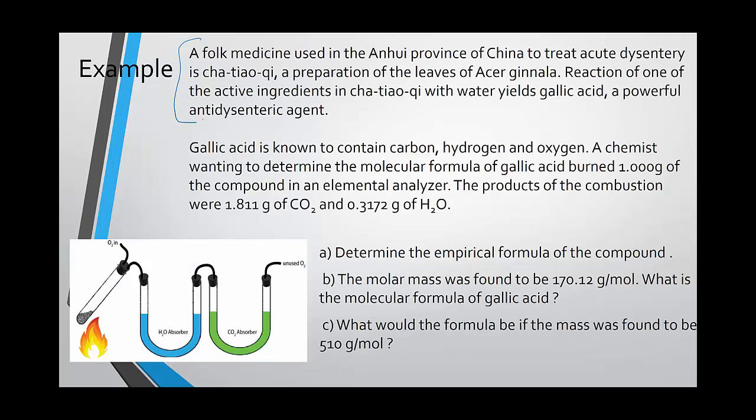This section of the problem is just to give you some background on the material that we're going to be doing this problem on, though not of any particular importance to the problem solving. We have gallic acid, which contains carbon, hydrogen, and oxygen. This is the problem's way of telling you that everything in the species must be carbon, hydrogen, or oxygen.